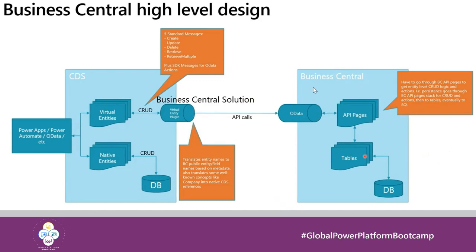Under the hood: in Business Central you have tables you want to expose to Dataverse. You create API pages on those tables. The installed application has a component called the virtual entity plugin that translates all entities from Business Central to virtual entities on Dataverse. These are exposed as virtual entities — not stored on Dataverse. So when Power Apps modifies a vendor through the virtual entity, the modification is automatically applied in Business Central. Operations are routed directly to Business Central because the data lives there.